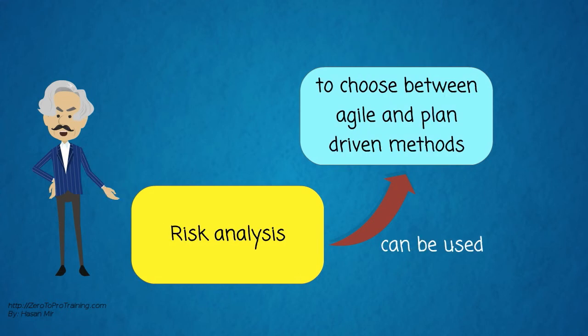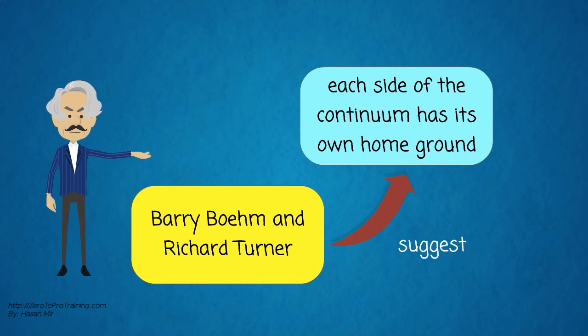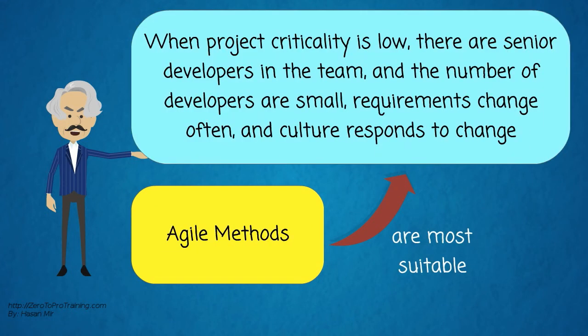Risk analysis can be used to choose between agile and plan-driven methods. Barry Boehm and Richard Turner suggest that each side of the continuum has its own home ground. Agile methods are most suitable when project criticality is low, there are senior developers in the team, the number of developers is small, requirements change often, and the culture responds to change.